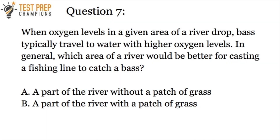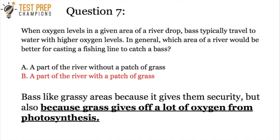Question seven is another critical thinking question to test your deeper understanding of photosynthesis. The answer is B — a part of the river with a patch of grass. Bass like grassy areas for security, but most importantly, grass gives off a lot of oxygen through photosynthesis. For your next step, check out the science video on how to answer graph questions to master that skill. Good luck with your test!